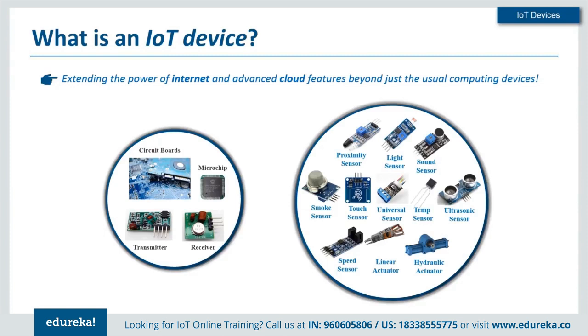Such low-energy modes of connectivity make it easy for these things to operate just about anywhere while letting us control and monitor them remotely from almost any part of the world. It is as if the British technology pioneer Kevin Ashton, who coined the phrase 'Internet of Things' back in 1999, somehow knew of these potentials that IoT brings out in devices today.